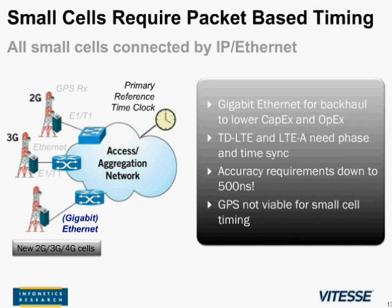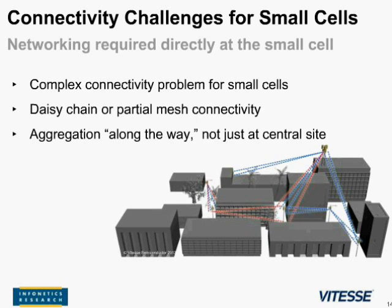There are also connectivity challenges for small cells. A lot of outdoor small cells will sit on top of lampposts and traffic signs, and there aren't many lampposts with fiber connectivity. That means the majority of these small cells will have to be connected with microwave and millimeter wave. Very often there will not be point-to-point connectivity available from each small cell back to a central aggregation site. Small cells will largely be connected to each other before finding a way back to a central aggregation site, possibly over multiple hops, requiring networking functions directly at the cell site.